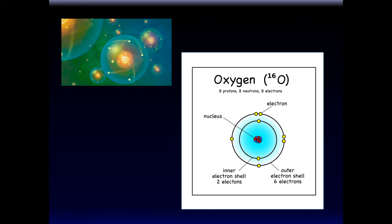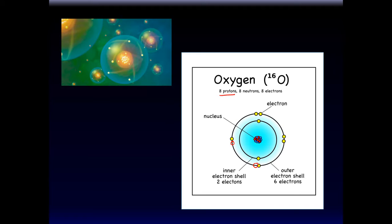Oxygen has eight protons and eight electrons. Two of the electrons go in the first orbital and six go in the second orbital. As we said, oxygen wants to get two more electrons to have completely full electron shells.